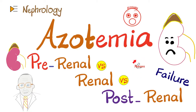Hey guys, it's Medicosis Perfectionatus, where medicine makes perfect sense. Let's continue our nephrology playlist. In the last video we started talking about acute kidney injury or acute renal failure. In the blood there is uremia, azotemia, and hypercreatinemia. In the urine there is hypovolemia, and the glomerular filtration rate is toast. Acute renal failure has three types and three stages — pre-renal, intra-renal, and post-renal.